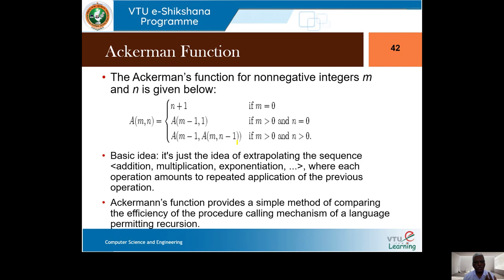When both m and n are greater than 0, we have a recursive call where one of the parameters is itself recursive. This is different from previous examples like the Fibonacci sequence — fib(n-1) + fib(n-2) — where there are two independent recursive calls. Here, within the recursive call, the first parameter is m-1 (a normal value) but the second parameter is again a recursive call, making evaluation more difficult.